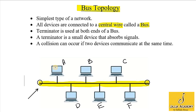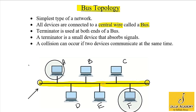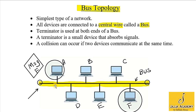The addresses of devices are not actually like A, B, C — I am just using alphabetic letters to make it simple. Suppose that computer A wants to communicate with computer F. Then computer A will send its message on this central wire, and the message should contain two types of information. These two types of information should be sent to the bus, and the message will move on the central bus and will reach all computers connected to this central wire.